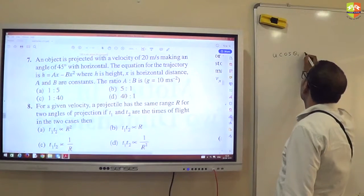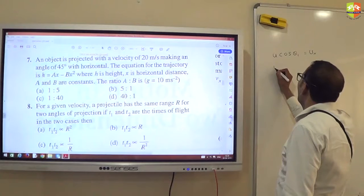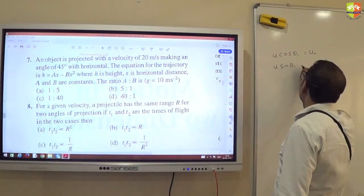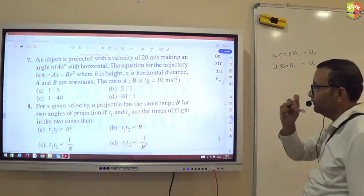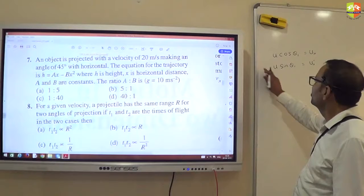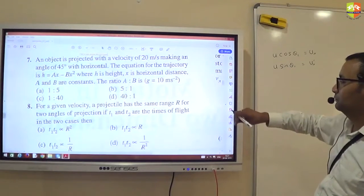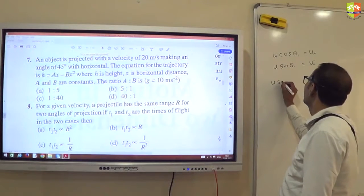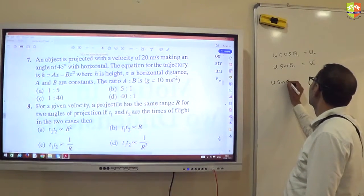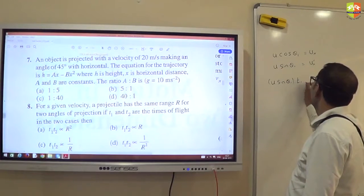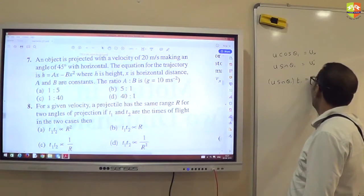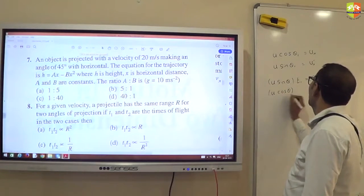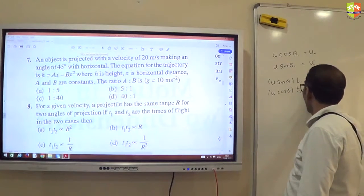So initial velocity along x-axis is ucosθ1, then along y-axis the initial velocity of the other one will be usinθ1. This is ux. Time of flight will be the same? No, time of flight - range is same.